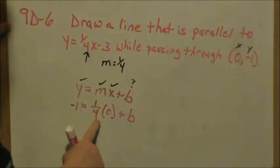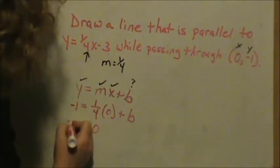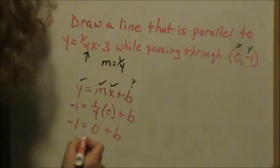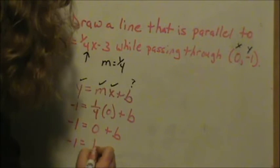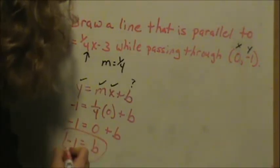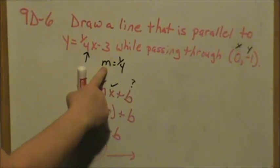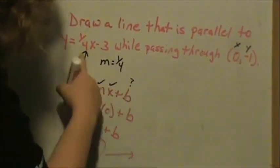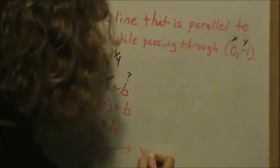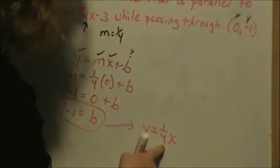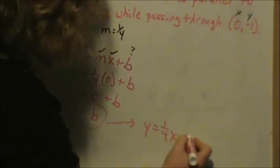0 times anything is 0. So negative 1 equals 0 plus b. So negative 1 equals b. That was my y intercept, which tells you that the equation of this line parallel to the original line is y equals 1 fourth x. That has the same slope, because they're parallel. And our intercept is negative 1.